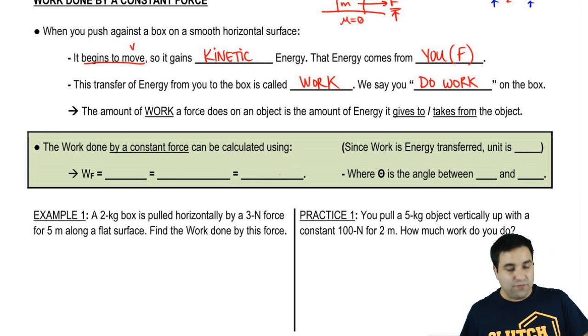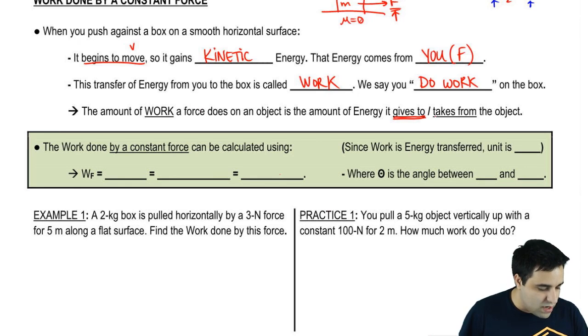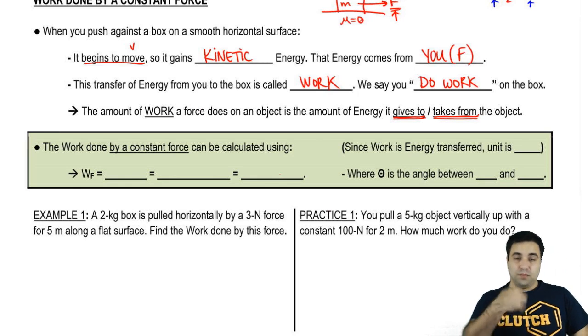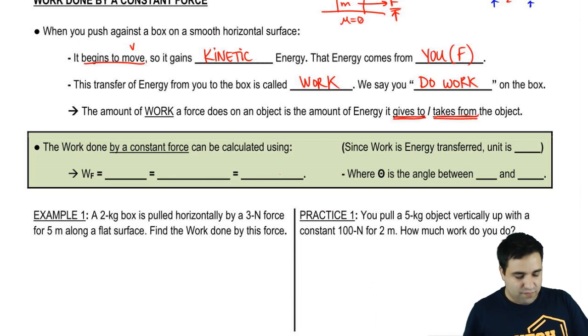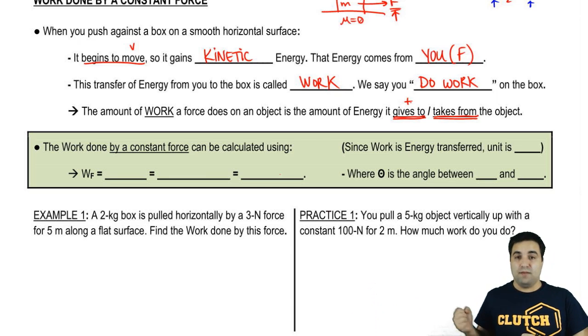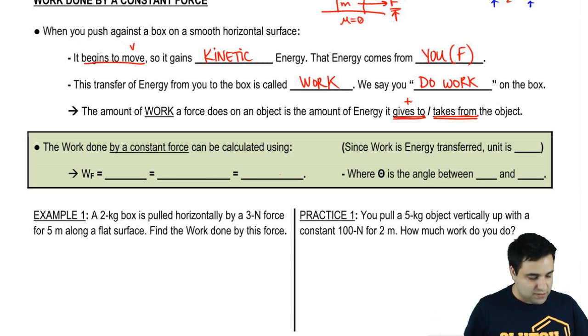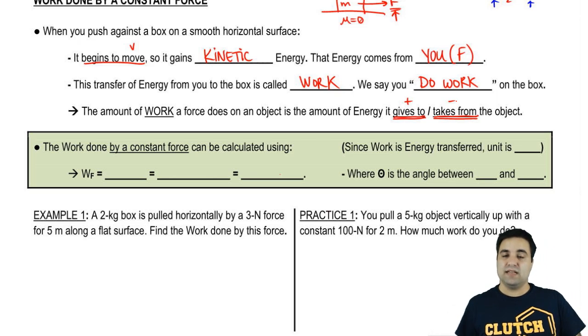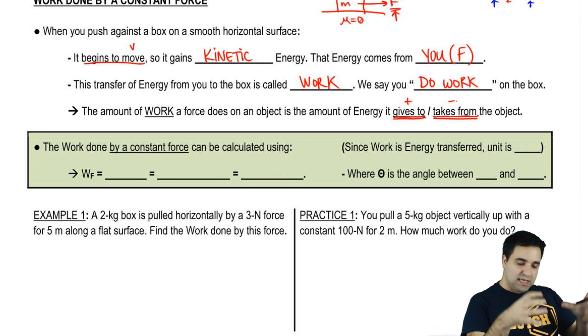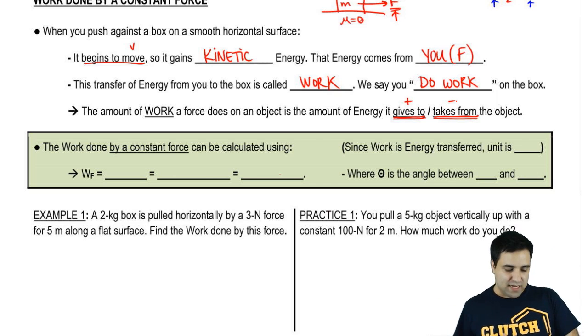The amount of work that a force does on an object is the amount of energy that it gives to that object or takes away from that object. So if you push a box and you make it faster, you're giving it energy, and therefore we're going to say you do positive work. If a box is moving and you push on it so that it slows down, you're stealing kinetic energy from that box, so you're taking energy away from the box, so you do negative work. We'll talk more about positive and negative work later, but I want you to understand that the idea of work is that work is energy in transfer.